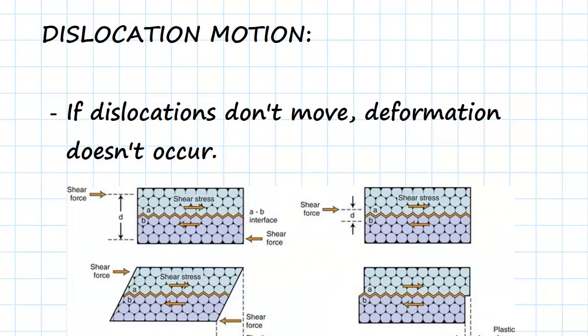Dislocation motion is essential. If a dislocation doesn't move, then deformation doesn't occur. If the dislocation doesn't move through the crystal structure, deformation doesn't occur, and that's a very important concept to understand.